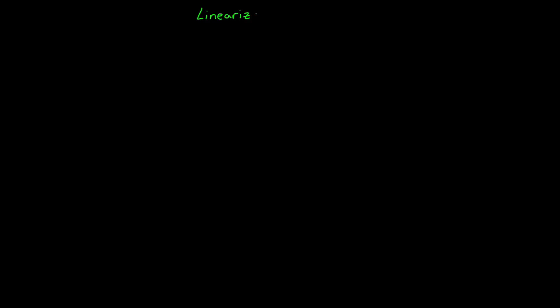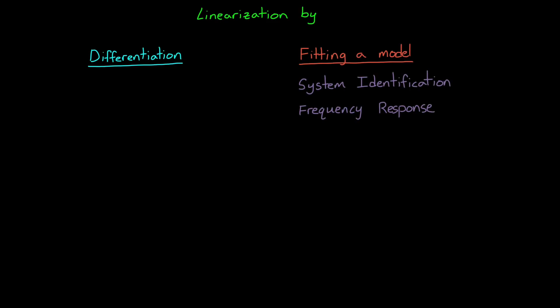The last thing I want to mention quickly is the difference between linearizing through differentiation, which is what we talked about in this video, and linearizing by fitting a linear model to a system. What I mean is that we can also use system identification and frequency response methods to find a linear model without having to solve the Jacobian.